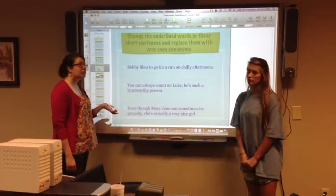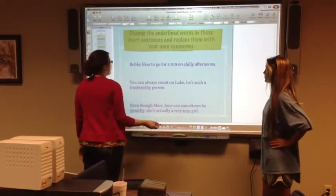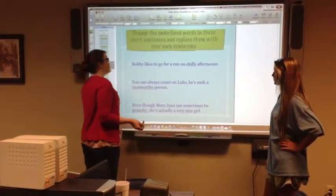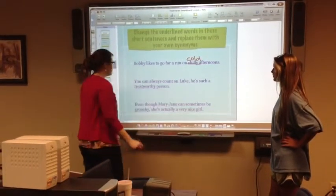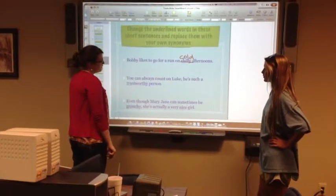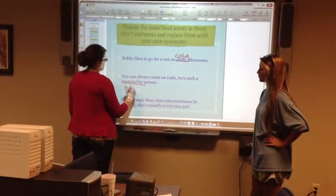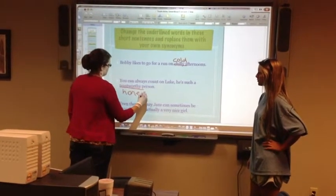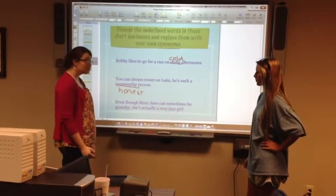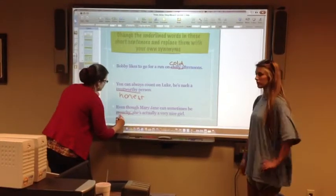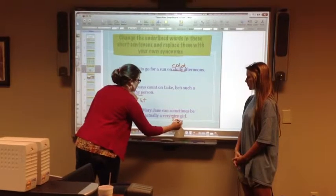For this one, we change the underlined words in the short sentence to replace them with their synonyms. For example, Bobby likes to go for a run on chilly afternoons — another word for chilly is cold. And you can always count on Lee; he's such a trustworthy person — another word for trustworthy is honest. Even though Mary Jane can sometimes be grouchy, she's actually a very nice girl — we can replace grouchy with mean and nice with sweet.